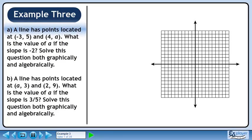A line has points located at (-3, 5) and (4, a). What is the value of a if the slope is -2? Solve this question both graphically and algebraically.